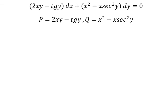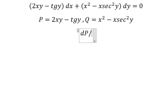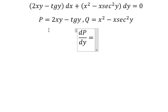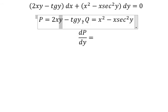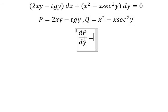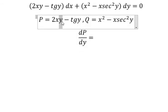That means we need to do first the partial derivative of P with respect to Y. So we have Y and tan Y in here. First the partial derivative of Y, we have number 1.